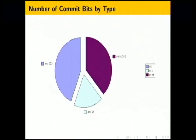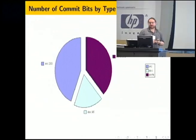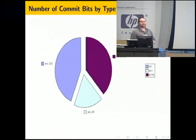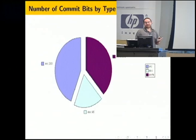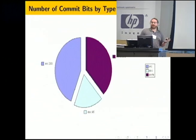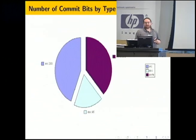Our committers include ports, source, and documentation trees in roughly unequal thirds. Many source committers also have ports commit bits, many ports committers also have source commit bits, and just about everyone commits to doc every now and again when something gets changed.